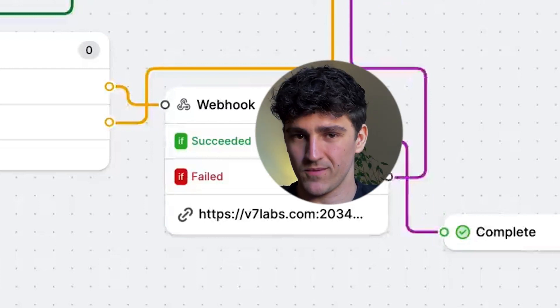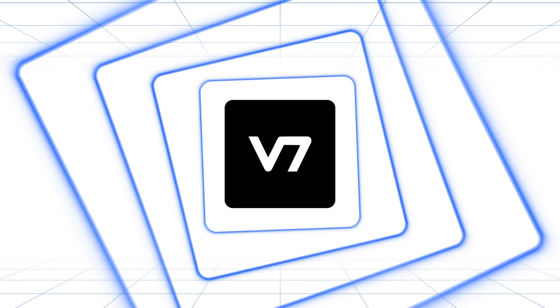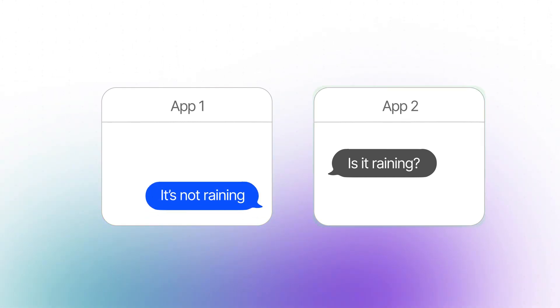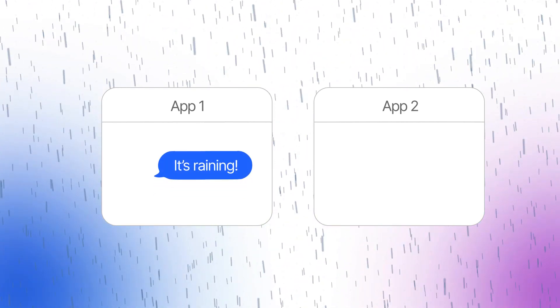But first, what are webhooks? Webhooks are a way for applications to communicate with each other in real time. One way of communication is that App2 asks App1 for some data every time it wants some, and App1 sends the data if it happens to have what App2 wants. Webhooks, on the other hand, are automated messages sent from apps when something happens. Those messages or payloads can be anything that the receiving end is expecting and knows how to work with.